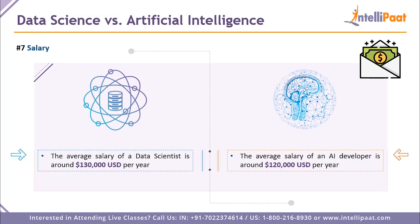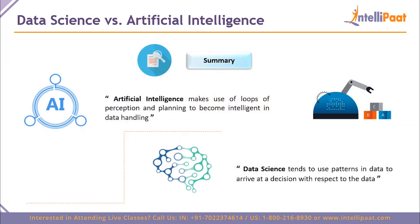Coming to salaries: the average salary of a data scientist is around 130,000 US dollars per year, and the average salary of an artificial intelligence developer is around 120,000 US dollars per year. These are average figures. In reality you can access three to four times those amounts depending on your country and company. Both career paths are very lucrative and fun to work in.